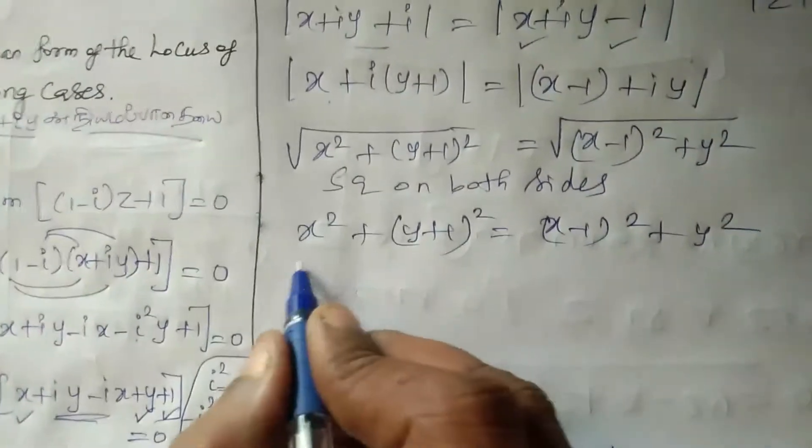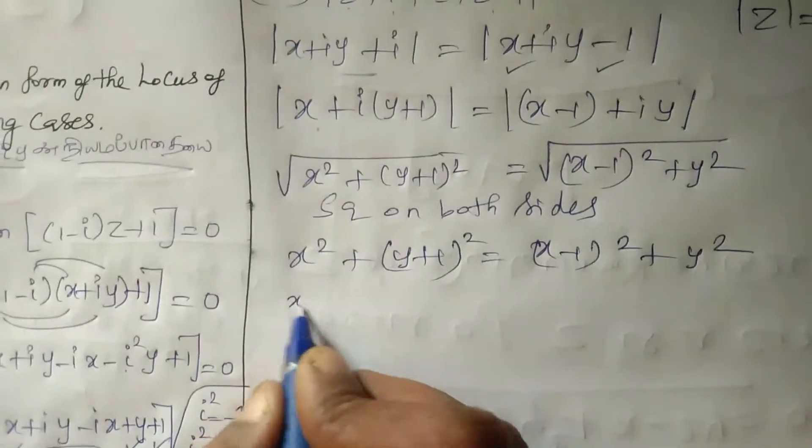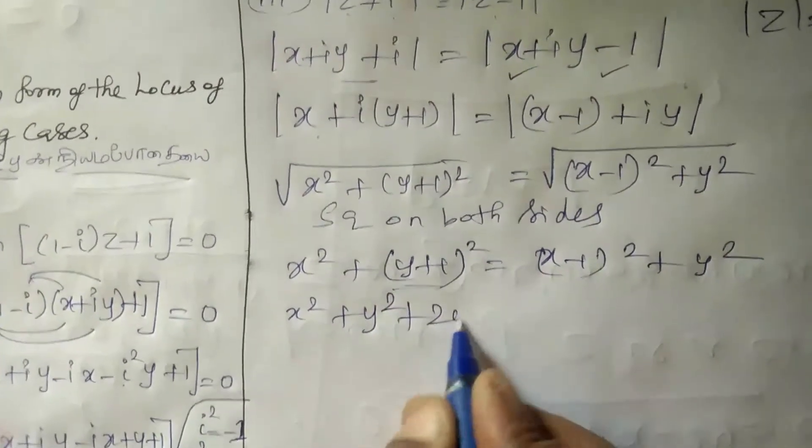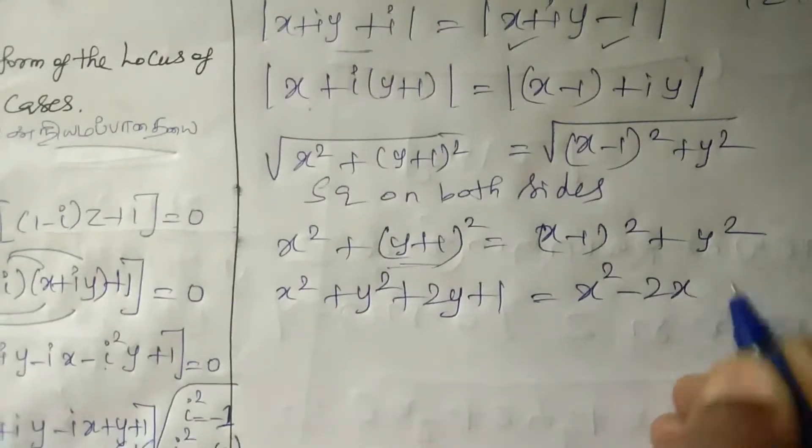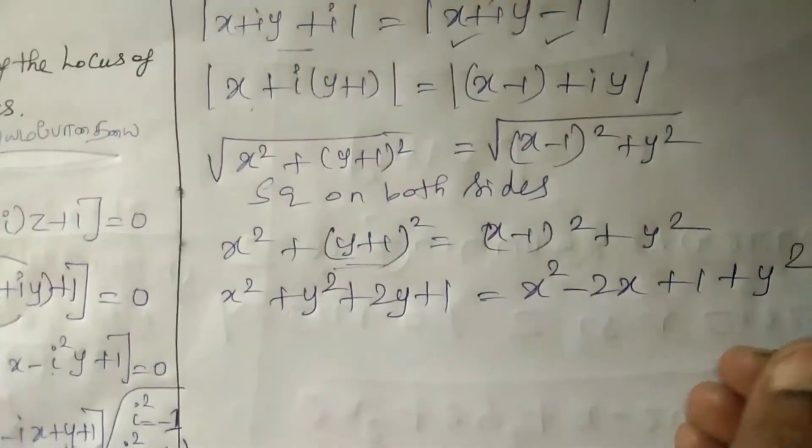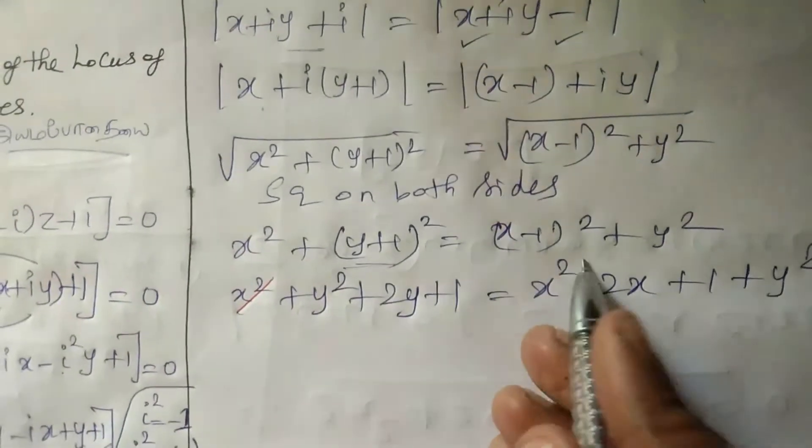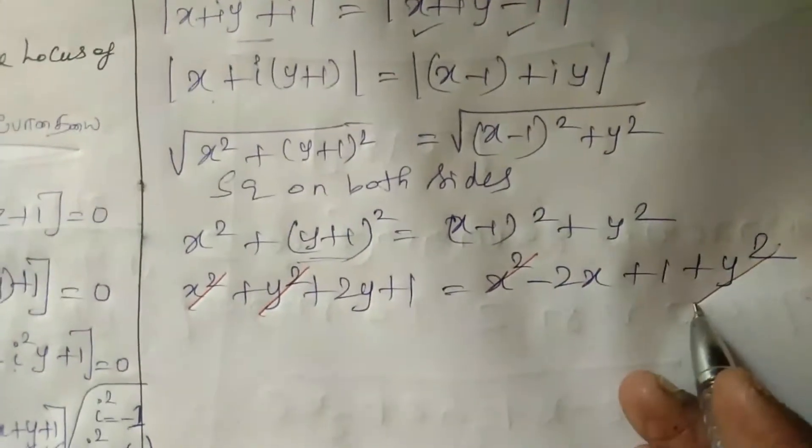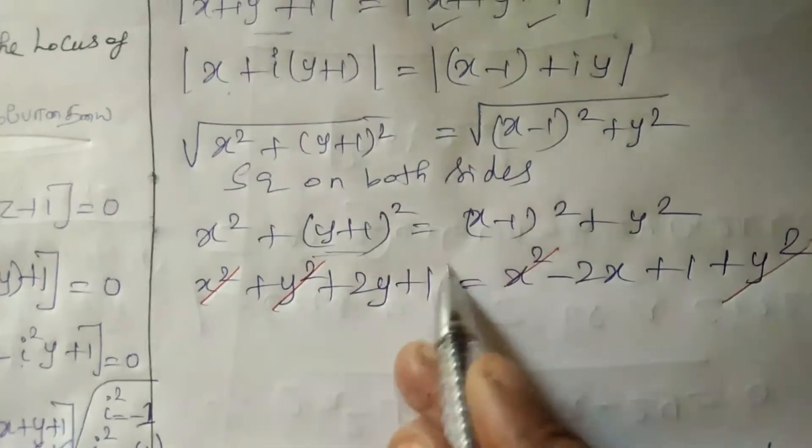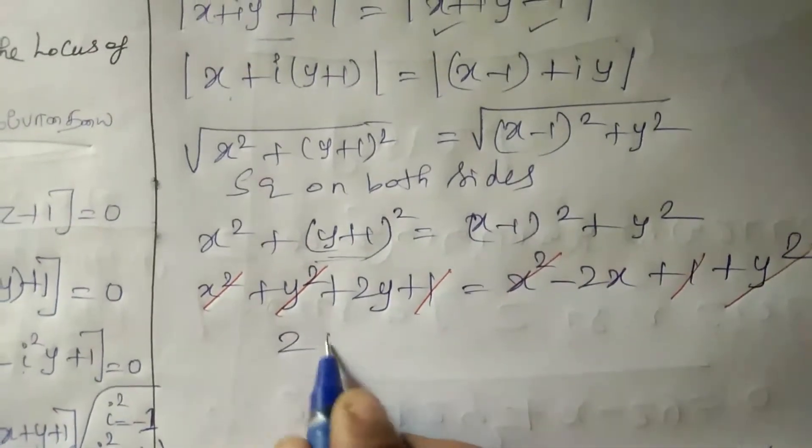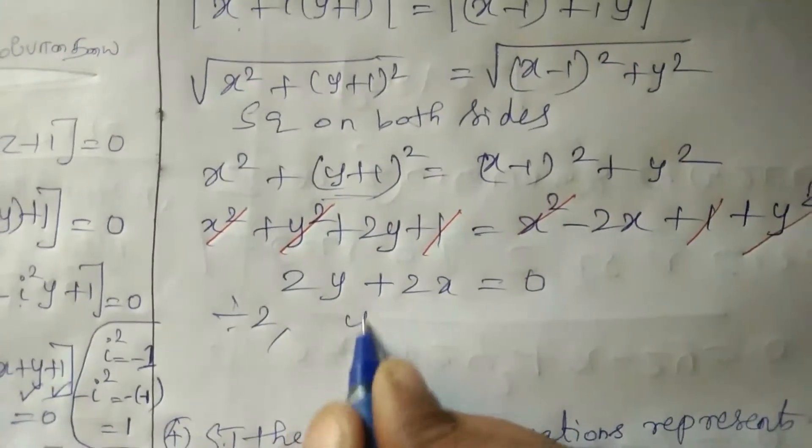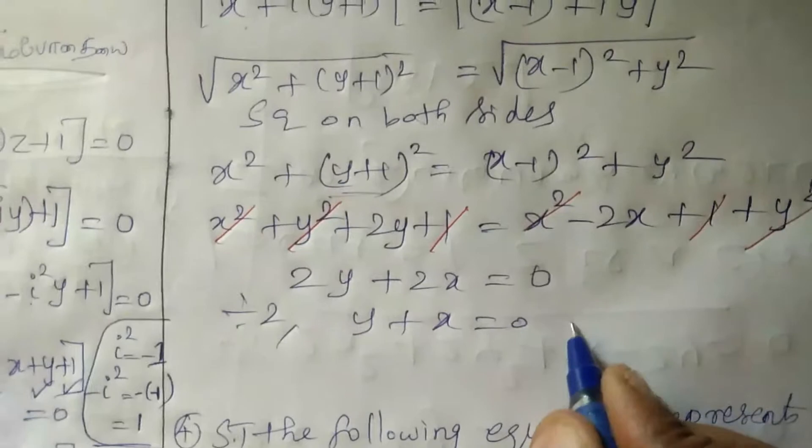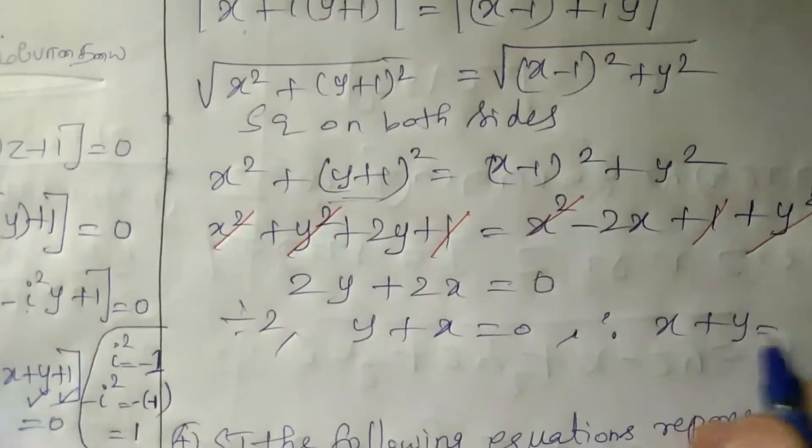Root removed by squaring both sides. So X squared plus Y plus 1 the whole squared equal to X minus 1 the whole squared plus Y squared. Expanding: X squared plus Y squared plus 2Y plus 1 is equal to X squared minus 2X plus 1 plus Y squared. Canceling terms: 2X plus 2Y equal to 0. Therefore X plus Y equal to 0.